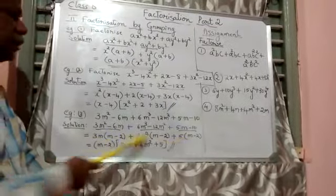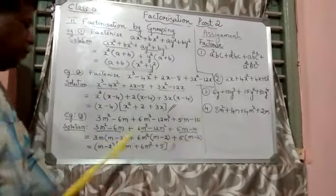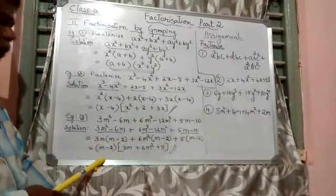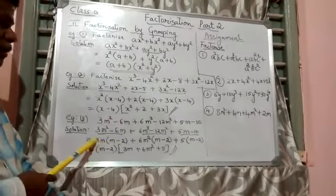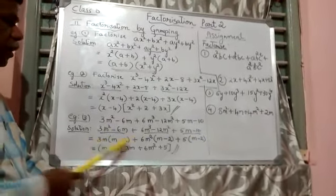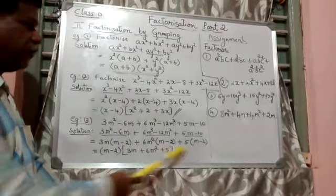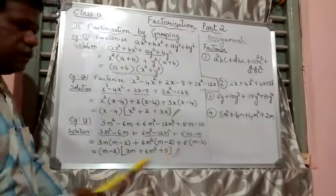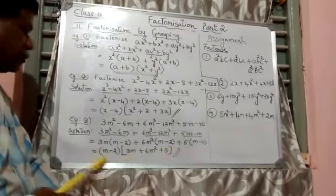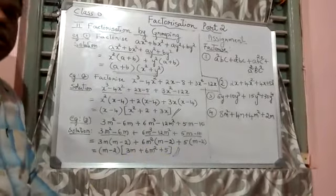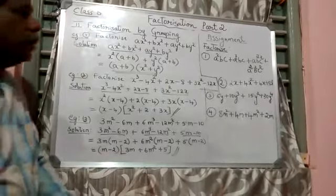In all three terms, m minus 2 is common. Take it out. Remaining is 3m plus 6m² plus 5, which becomes the second factor. So this is the solution to the third example.